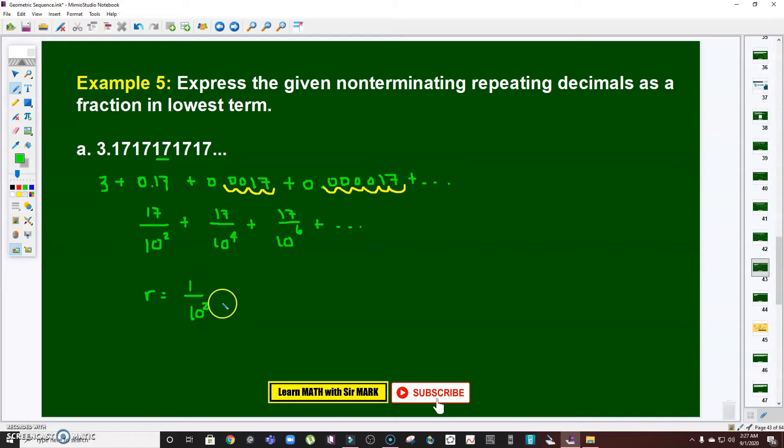So it's now pretty obvious that the common ratio is 1 over 10 squared. If I'm going to divide this by the first term, the 17 over 10 squared cancel, so what will be left is 1 over 10 squared. Therefore, the sum to infinity is a over 1 minus r. That's equal to the first term.